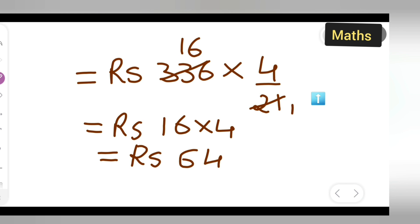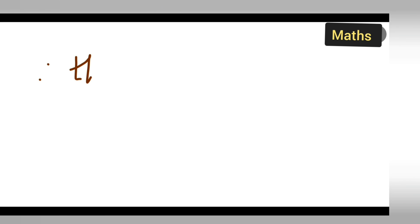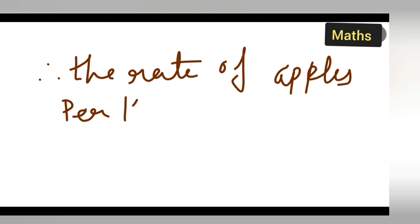Therefore, you can say that the rate of apples per kg is rupees 64. Therefore, the rate of apples per kg is equal to rupees 64.